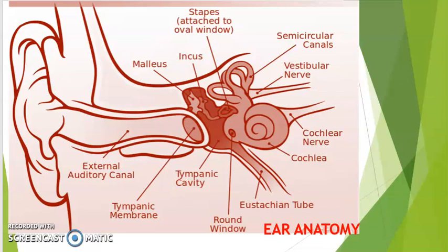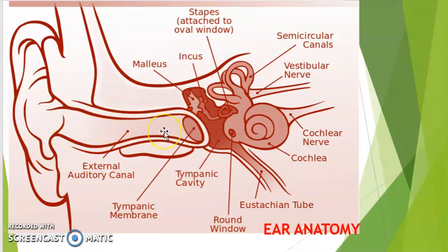The ear can be divided into three parts: outer ear, middle ear, and inner ear. The outer ear consists of the pinna and external auditory canal. The outer ear starts with the pinna — it is the part that you can see and touch. Its function is to act as a funnel and to collect as much sound waves as possible and channel them to the external auditory canal. The sound waves pass through the auditory canal and eventually meet the eardrum or tympanic membrane.